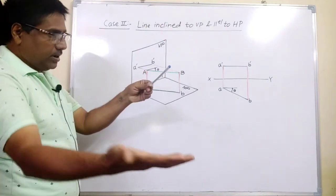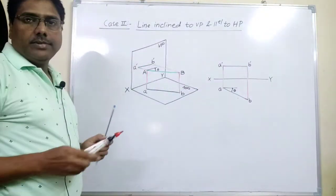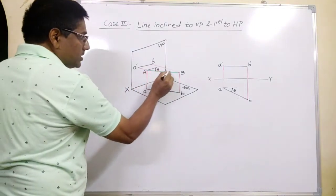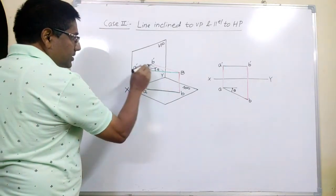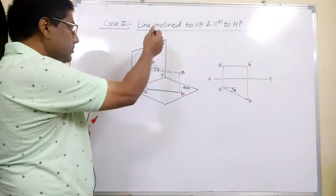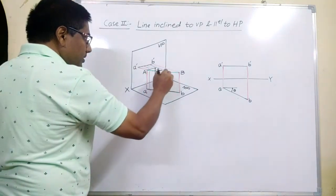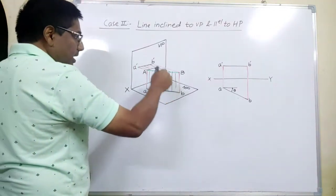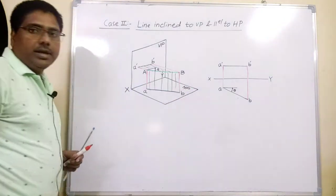We say this line is inclined to VP because if you consider each and every point on this line, these points are at different distances from the vertical plane. That's why this line makes a certain angle with the vertical plane. Whereas if you consider each and every point on this line with respect to the horizontal plane, all these points are at the same distance from the horizontal plane — therefore this line is parallel to HP.